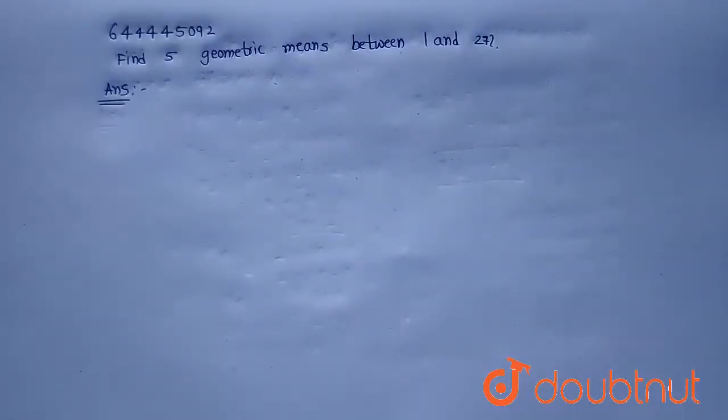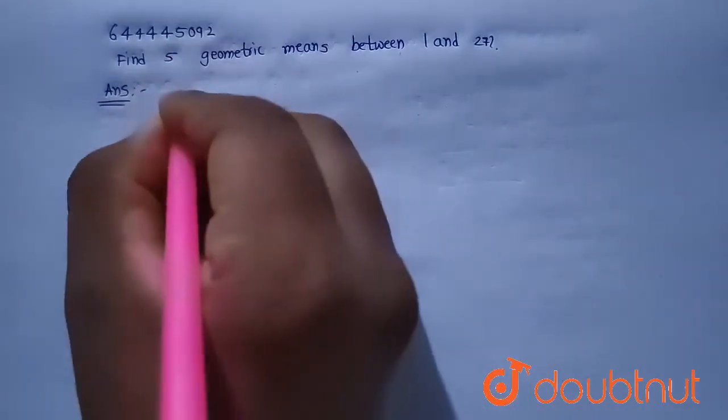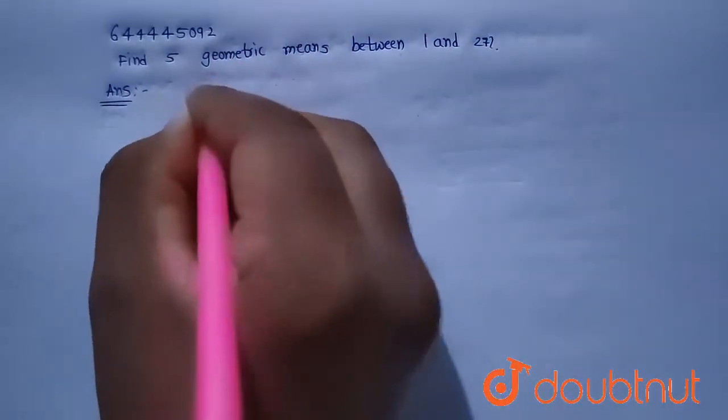Find five geometric means between 1 and 27. So, given the initial term of the geometric series as 1,